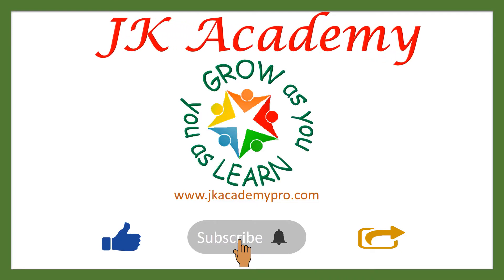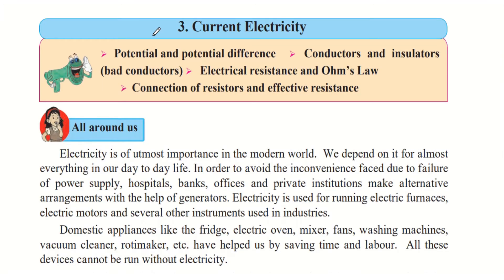Today we will learn about the third chapter in science for standard 9, that is current electricity. In this chapter we will learn about potential and potential difference, conductors and insulators, electrical resistance and Ohm's law, and connection of resistors and effective resistance.